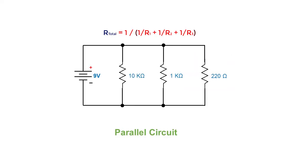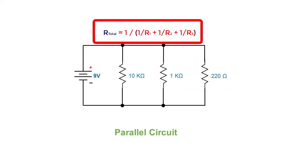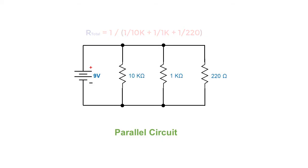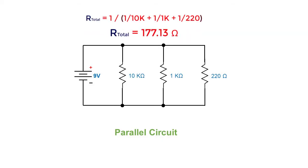We can actually compute for it using this formula: total resistance is equal to 1 over (1/R1 + 1/R2 + 1/R3). When we substitute the values of the three resistors — 10 kilo ohm, 1 kilo ohm, and 220 ohm — the total resistance is computed as 177.13 ohms, which is very close to what we have measured.